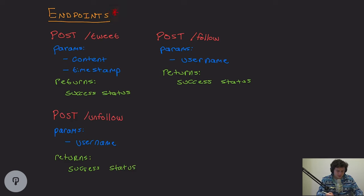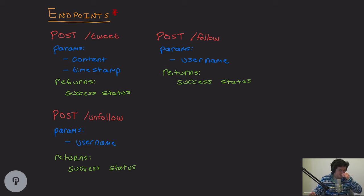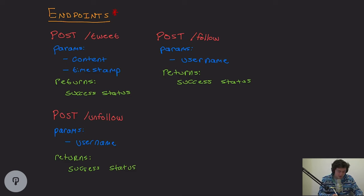I again have this star on our endpoints because, as I mentioned, we're going to assume that all of these endpoints — follow, tweet, unfollow, etc. — are going to be authenticated. We're not going to get into adding extra parameters like a session token or anything like that. So first of all, in order to tweet something, we'll use a POST — that's pretty intuitive for modifying the server, and ironically we post a tweet, which even follows the English language.